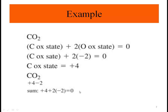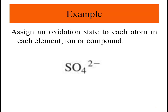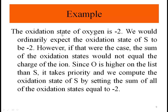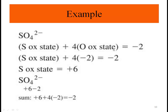Now let's assign oxidation states in the sulfate ion SO4²⁻. Since we're dealing with an ion, the sum must equal minus two. The oxidation state of oxygen is minus two. We would ordinarily expect sulfur to also be minus two, but if that were the case the sum would not equal the charge of the ion. Since oxygen has higher electronegativity, it takes priority, and we compute the oxidation state of S by setting the sum of all oxidation states equal to minus two.